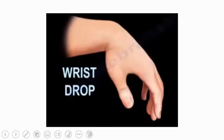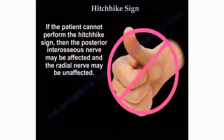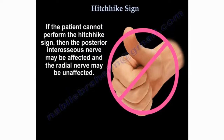Wrist drop occurs in a patient with radial nerve palsy, usually from a humerus fracture, trauma, or surgery. The hitchhike sign means the person cannot extend the thumb — this occurs with either radial nerve palsy or posterior interosseous nerve palsy.